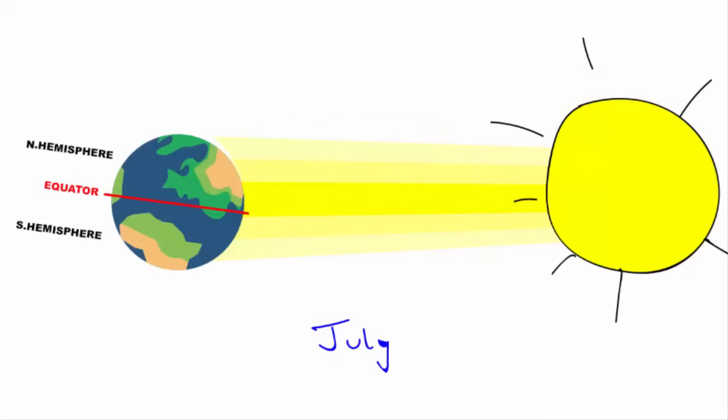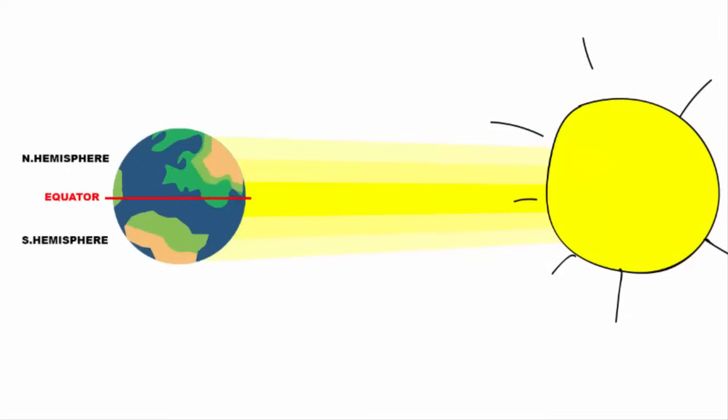Now whether it is January or July, one thing you must keep in mind is that near the equator, the sea level pressure is always low. And the area is known as equatorial low. And the reason behind that is, however the Earth moves or rotates, the equator receives insolation all throughout the year.